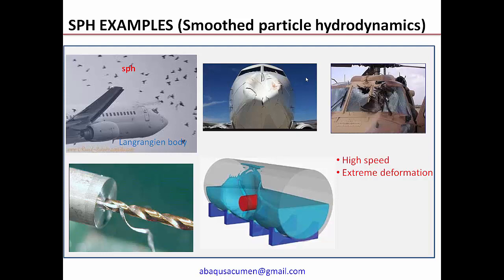Another good example is metal cutting, where you see severe deformation and chip formation. The drill is a very hard material cutting through steel, which is a softer material, forming chips. This can be effectively modeled in SPH where the steel material — the part being drilled — is the SPH part, and the drill, being the hardest part, can be modeled as a rigid body.